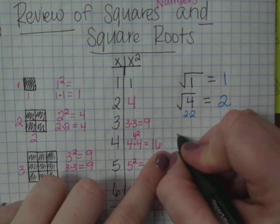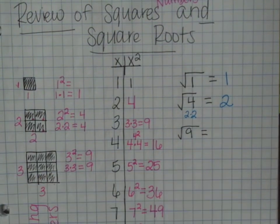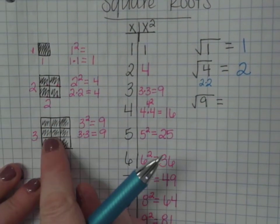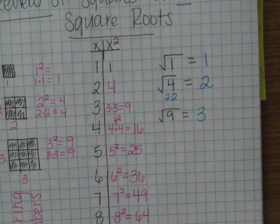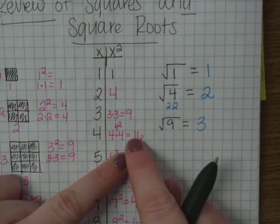Then if we have the square root of 9, or if I had 9 squares, it would be 3 would be my answer. So, I'm just going to go down and notice that's also these numbers right here.